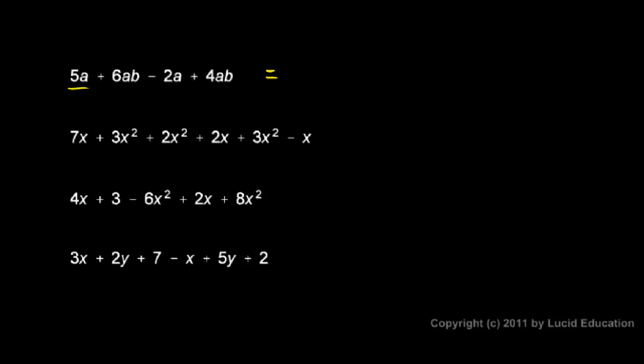Here's a 5a and a negative 2a. I just found all the a terms, and I underlined them to help me visually keep track of them. And I'll combine those, 5a and negative 2a. Those combine to give me a 3a.